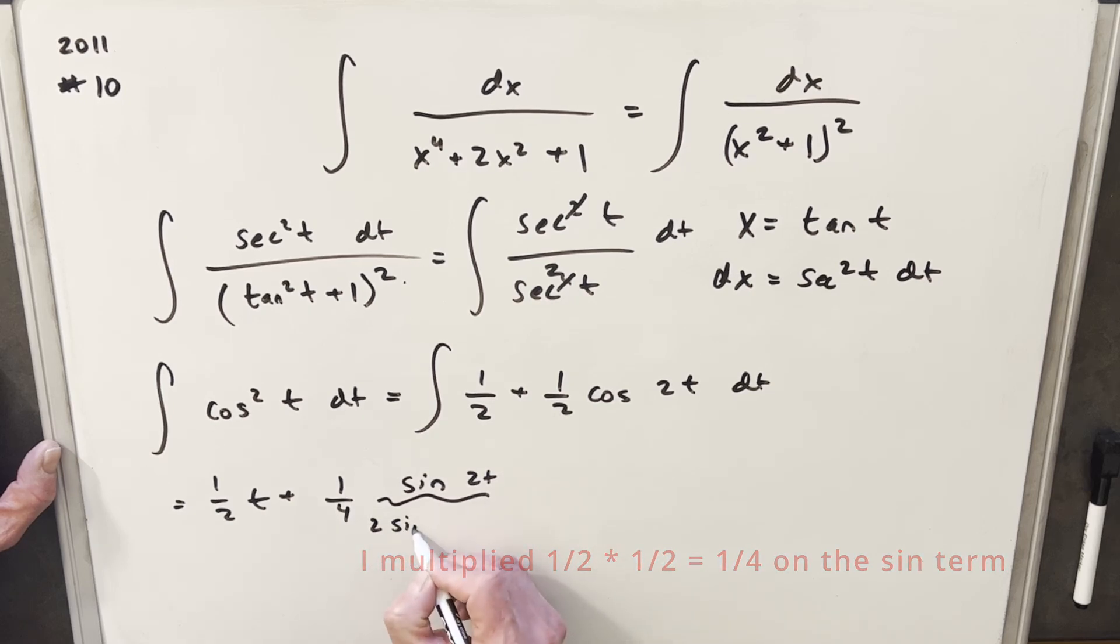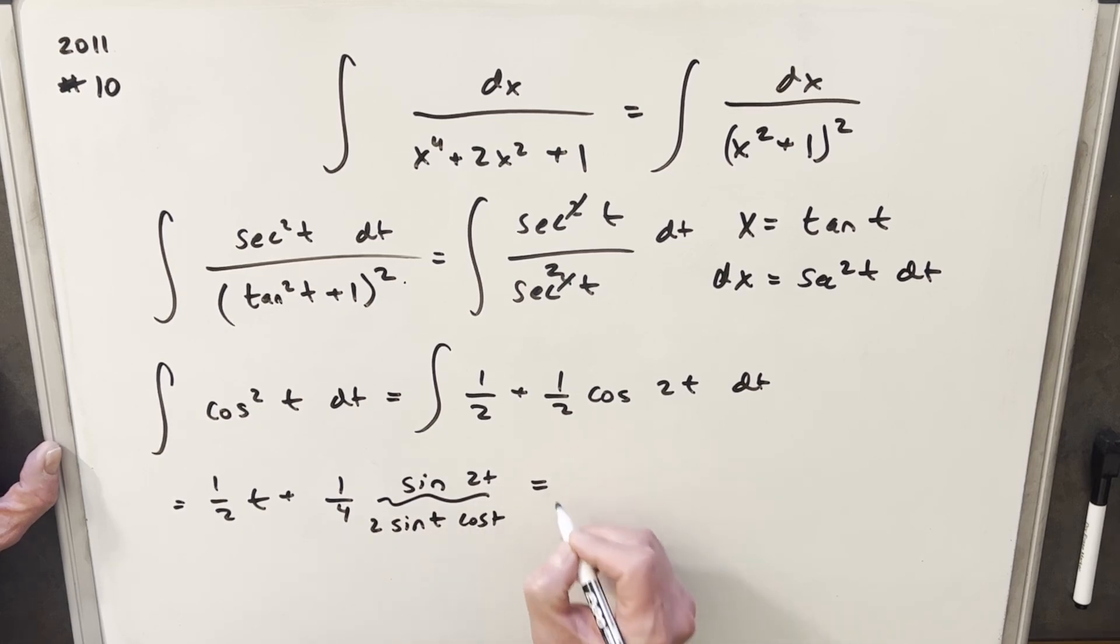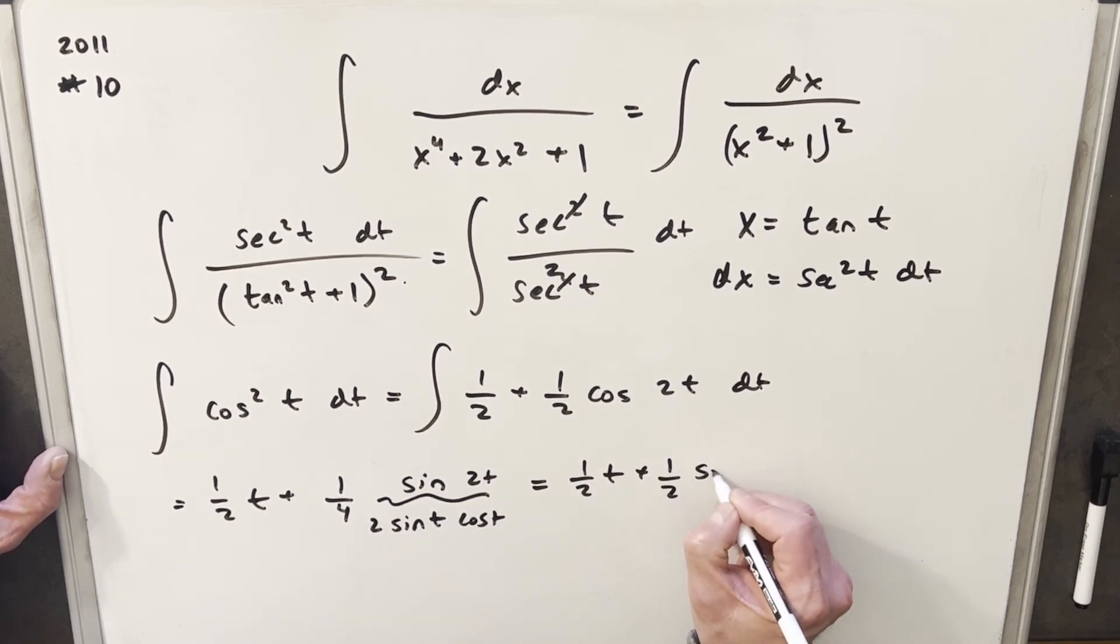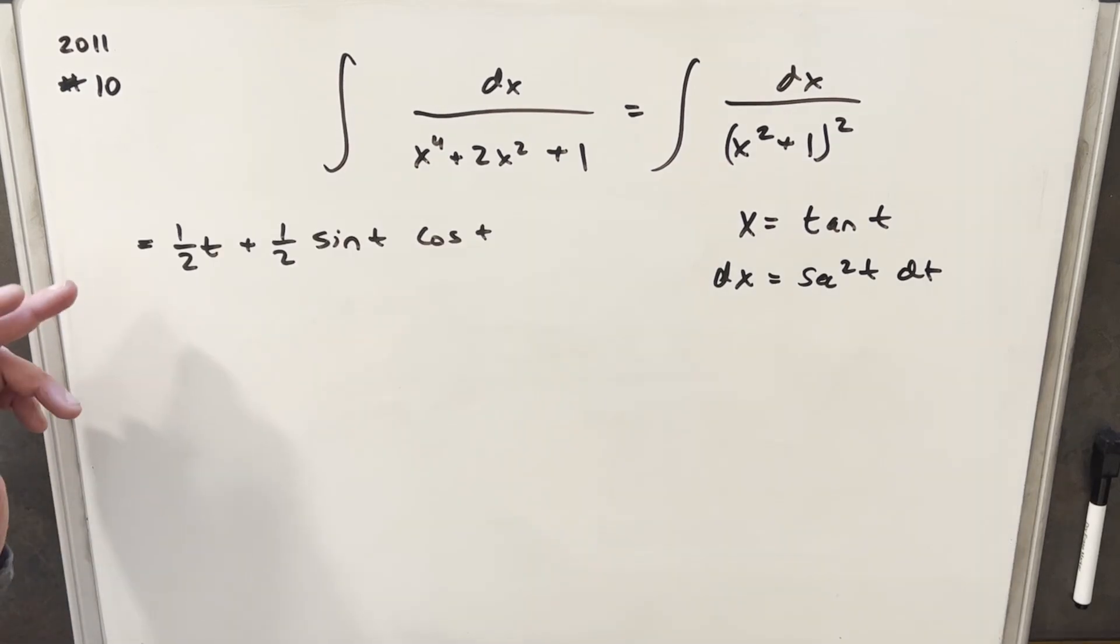And write this as 2 sine t cosine t. Let's just clean that up real quick. So we're going to have half t plus 1 fourth times 2, we're going to have 1 half sine t cosine t. Okay, now to finish it, all we need to do is back substitute.